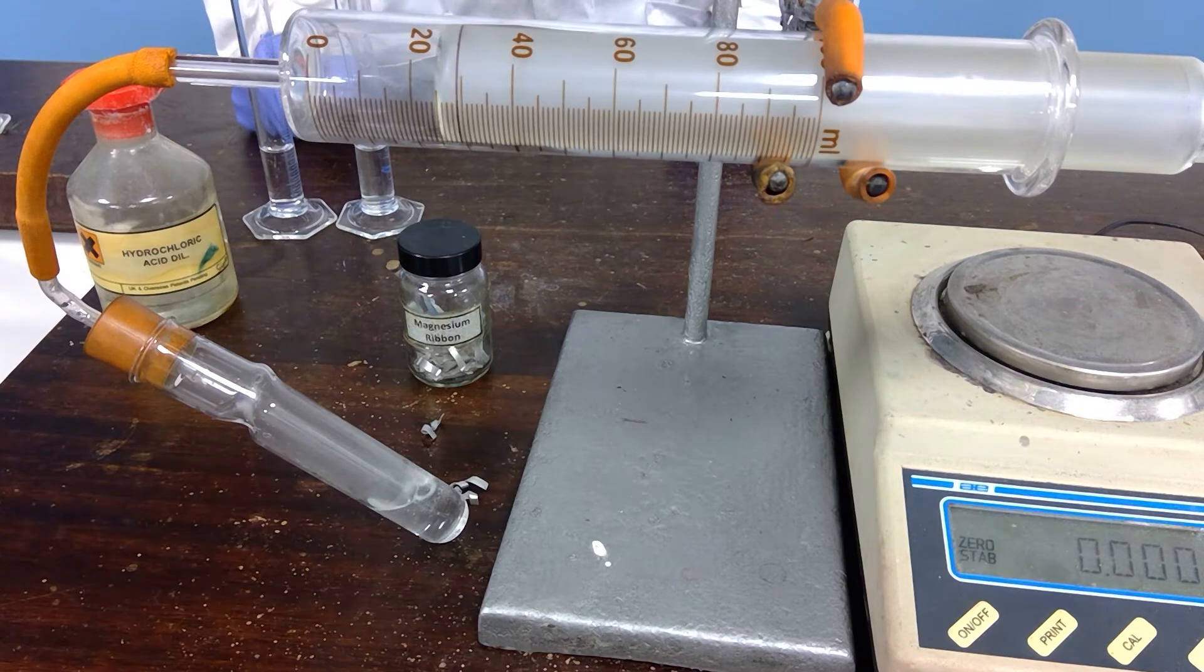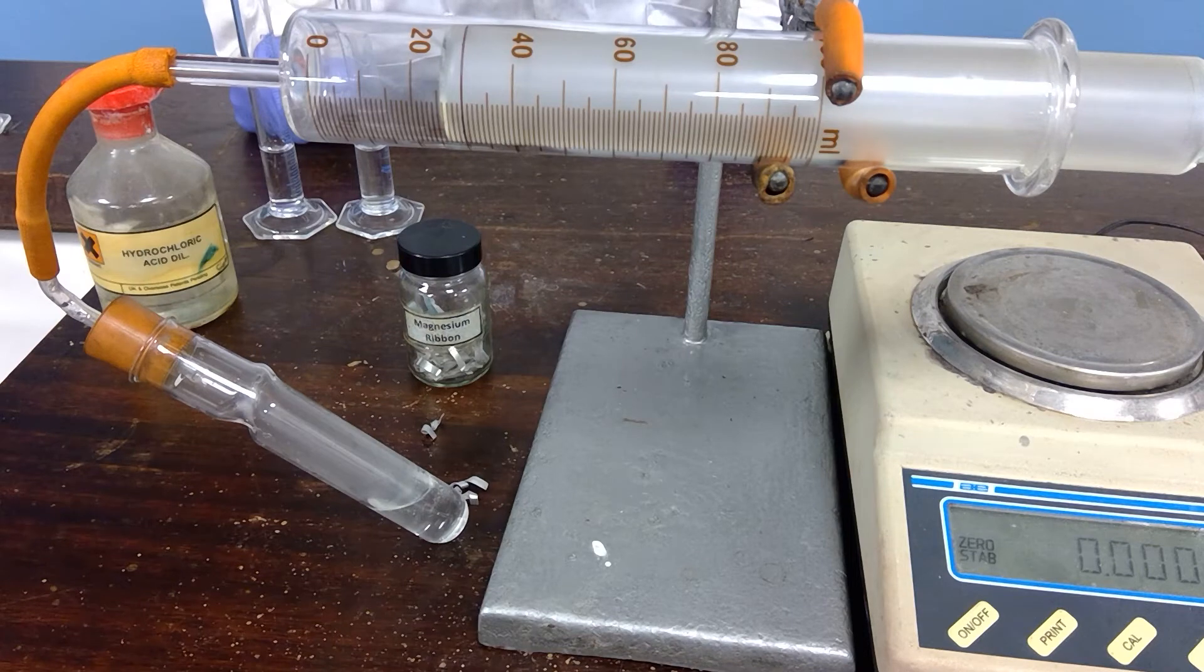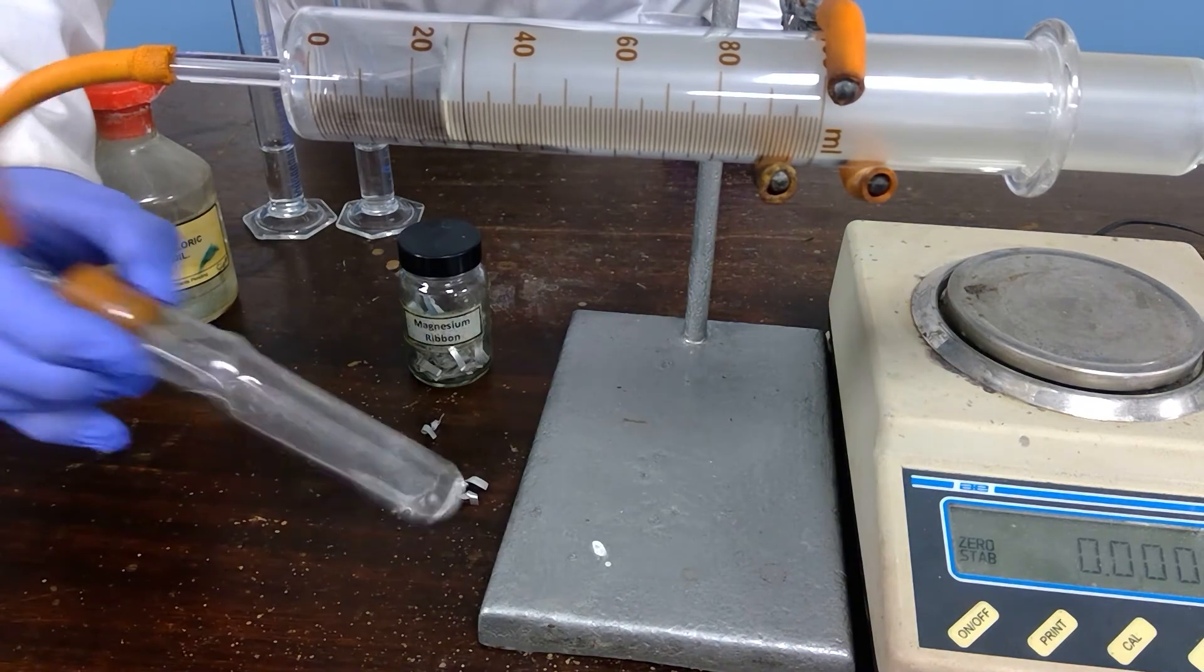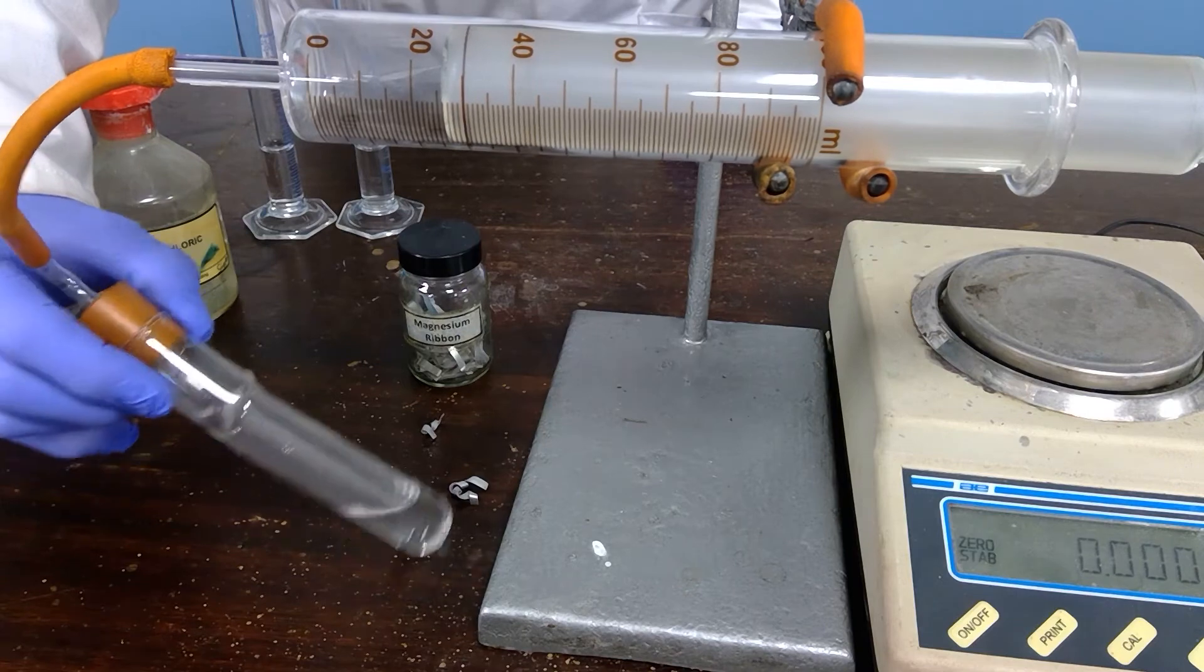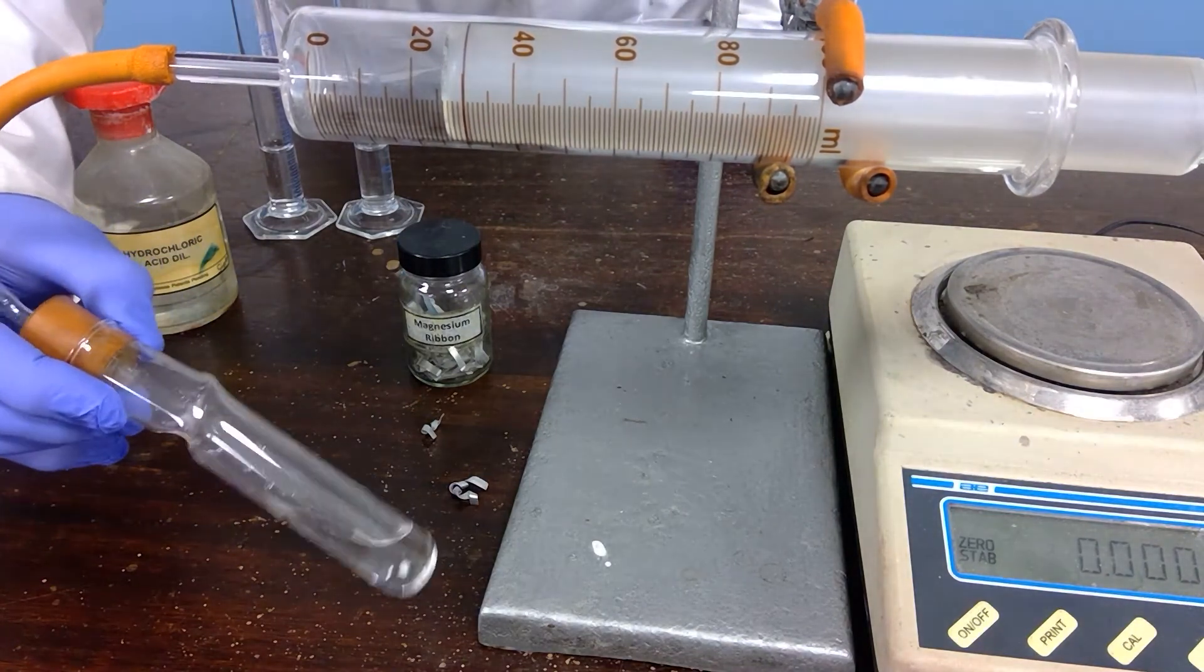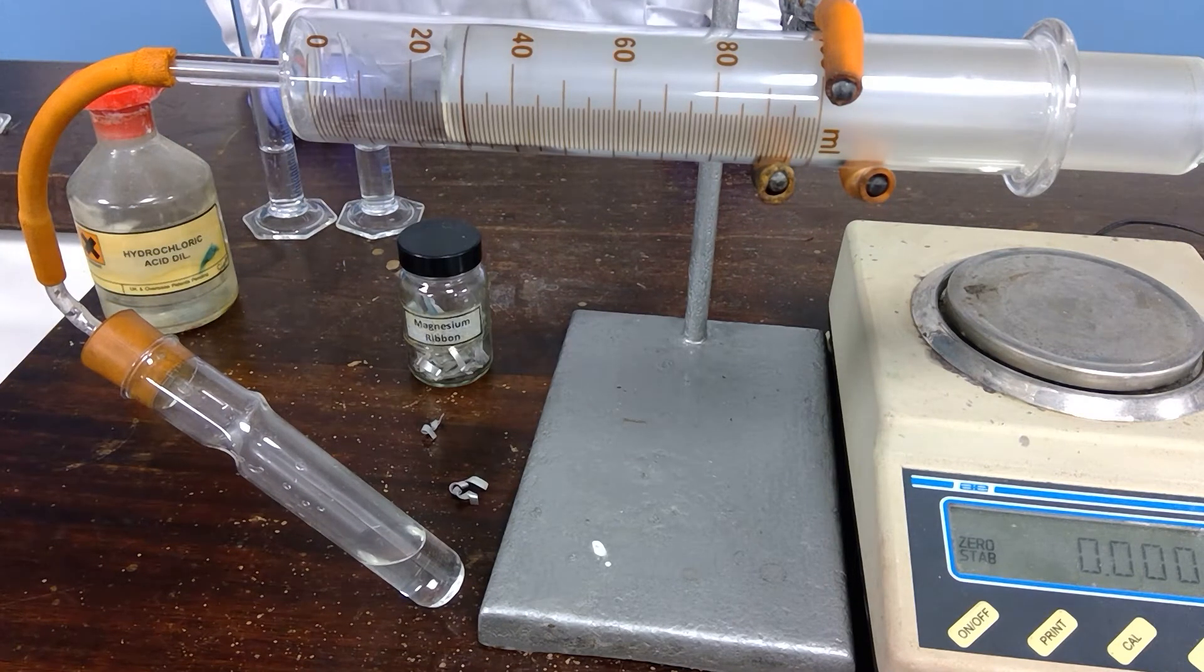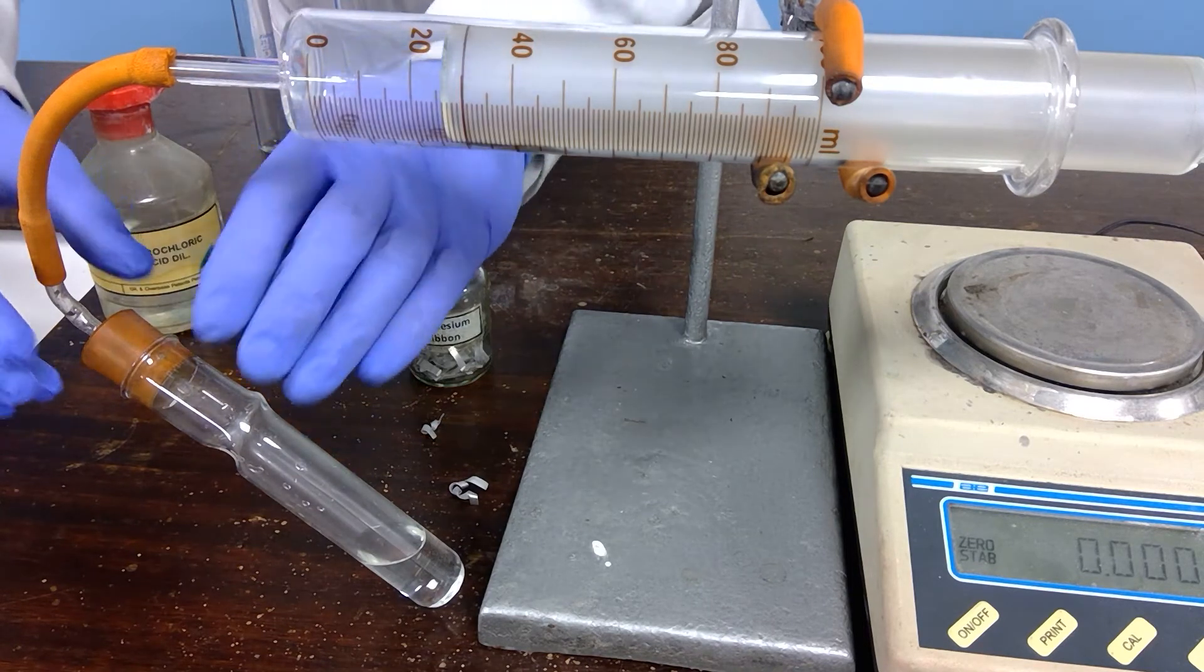There's still bubbling occurring, the rate of reaction is diminishing. We are still producing some hydrogen gas but it is slowing up, and eventually it will reach a point where there is no more magnesium left because the hydrochloric acid is in excess. If you would like to take that reading, we'll move on to the second experiment now.